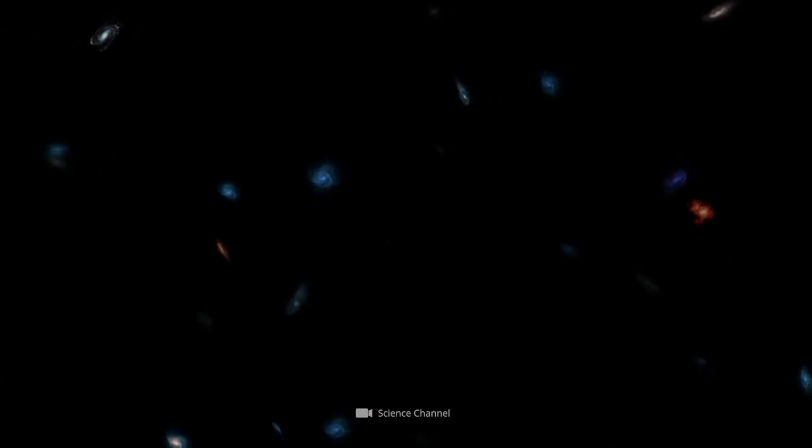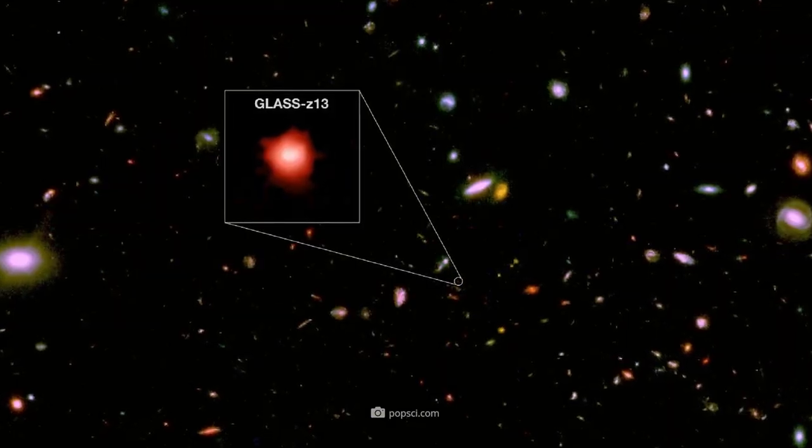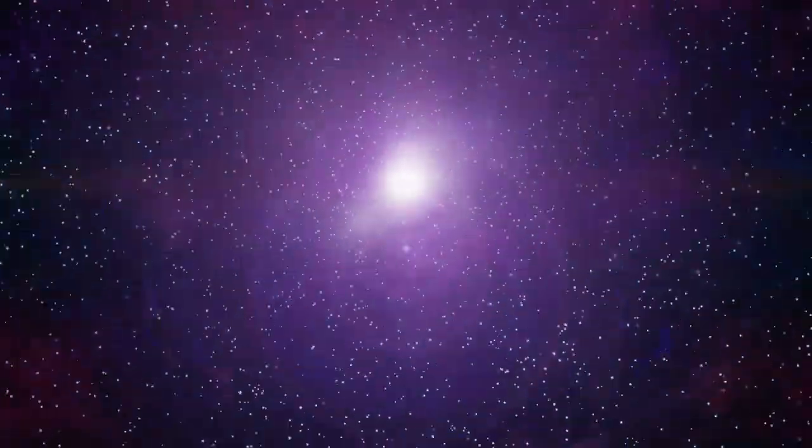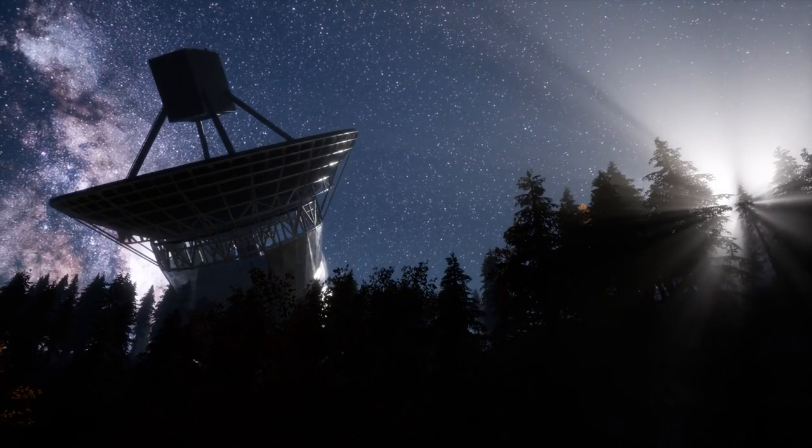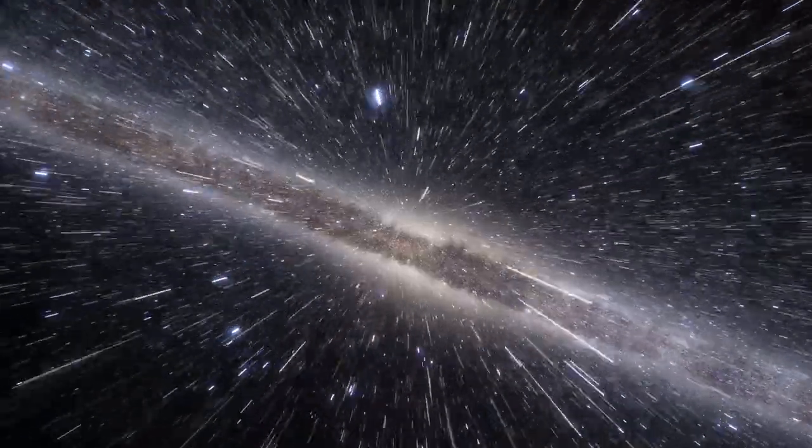At the top of the list of the probably oldest galaxies are currently the galaxy Glass Z13 with an age of 13.5 billion years and the galaxy Sears 93316 which could be even a tad older. Remember, the Big Bang should be about 13.7 billion years ago and after the Big Bang, there was supposedly nothing for a very long time. But Webb's pictures show something else.